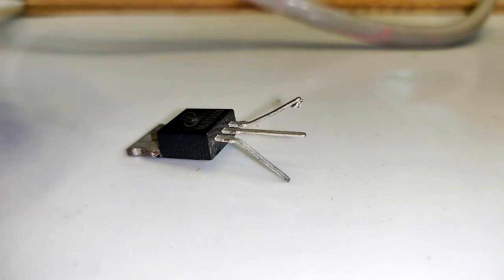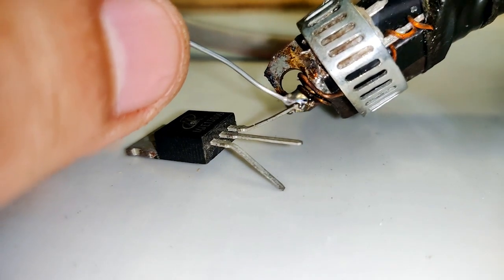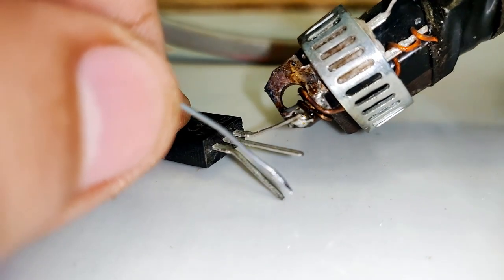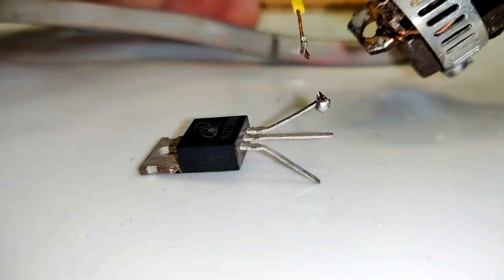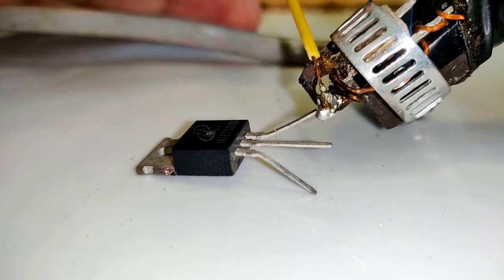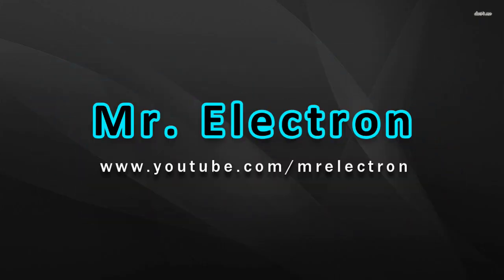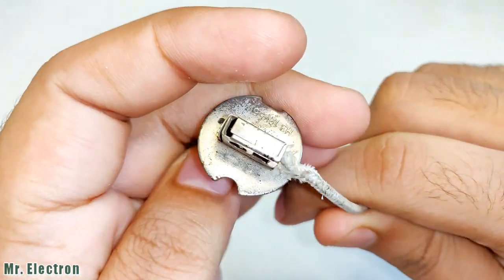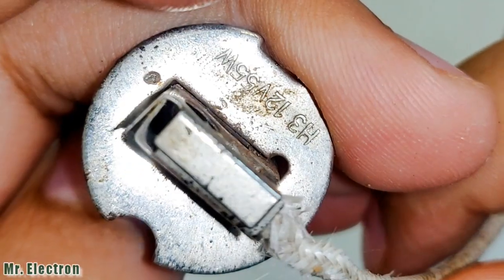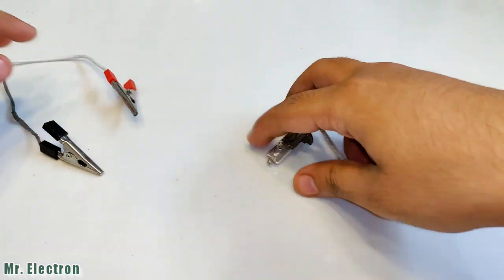This is a 12 volt 55 watt car headlamp bulb, H3 type. These two wires are from a 12 volt adapter.